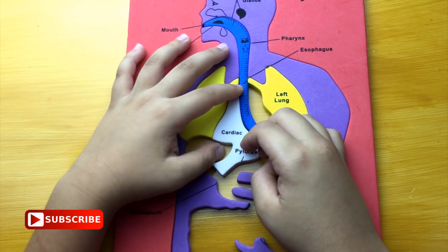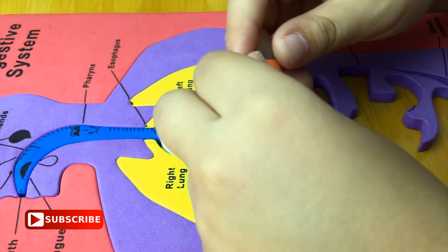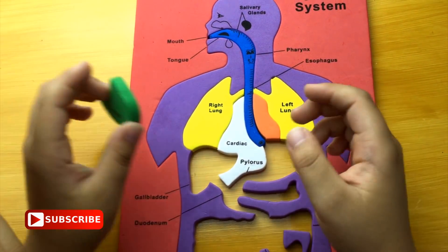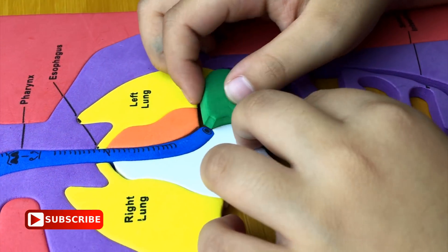This is cardiac. And this is the other side of the right. And this is the stomach next to pylorus.